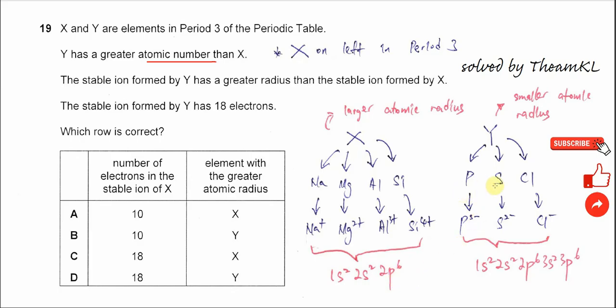For the last three elements - phosphorus, sulfur, and chlorine - they will gain electrons. Phosphorus gains three electrons to form phosphide, sulfur gains two electrons to form sulfide, and chlorine gains one electron to form chloride. They also form the isoelectronic configuration 1s²2s²2p⁶3p⁶. All three anions have the same electronic configuration.